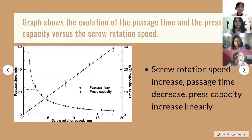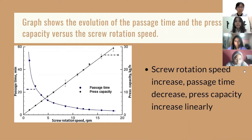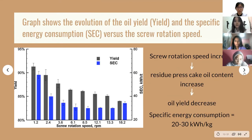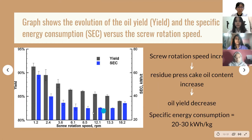The screw rotation speed is controlled from 0 to 18.2 rpm, and passage time, press capacity, oil yield, and specific energy consumption of the press are recorded. From the graph, when the screw rotation speed increases, the passage time of feed decreases and the press capacity increases linearly with rotation speed. Also, with increasing screw rotation speed, the residual press cake oil content increases while the oil yield decreases. The specific energy consumption is recorded above 20–30 kWh per kg.